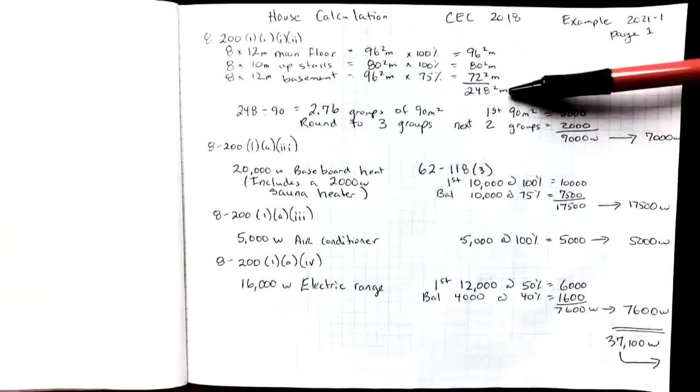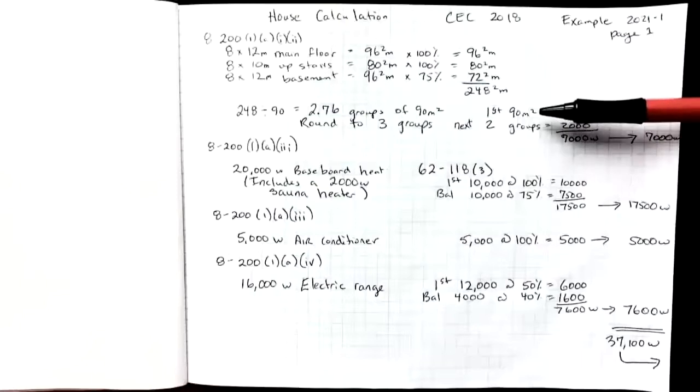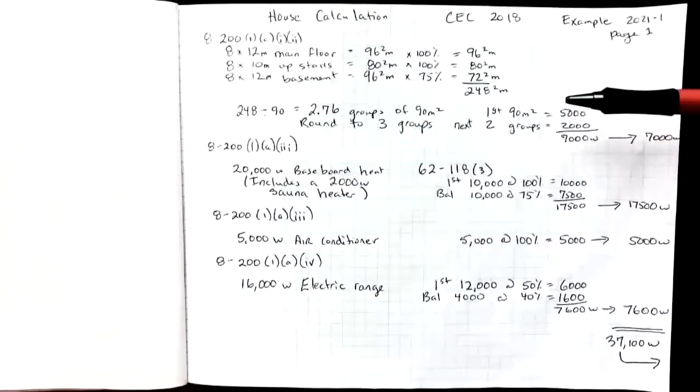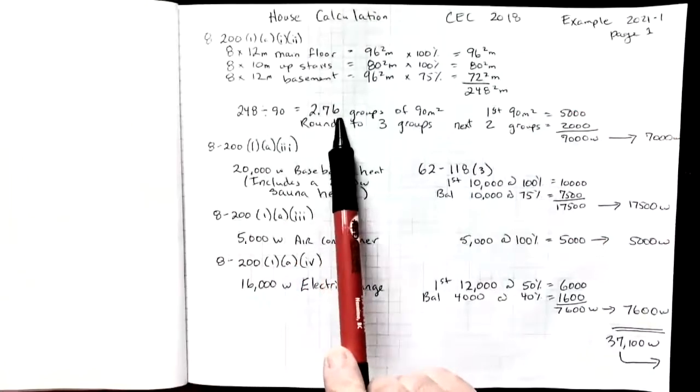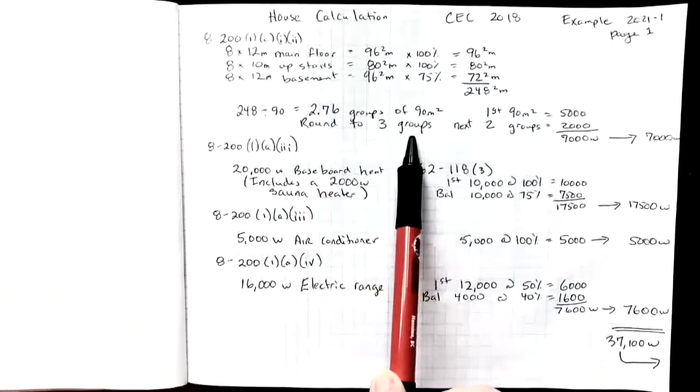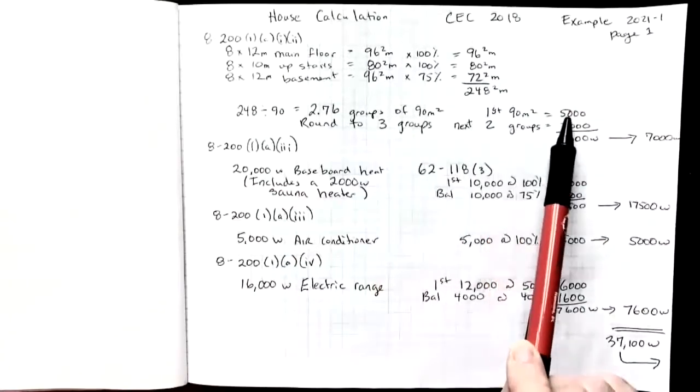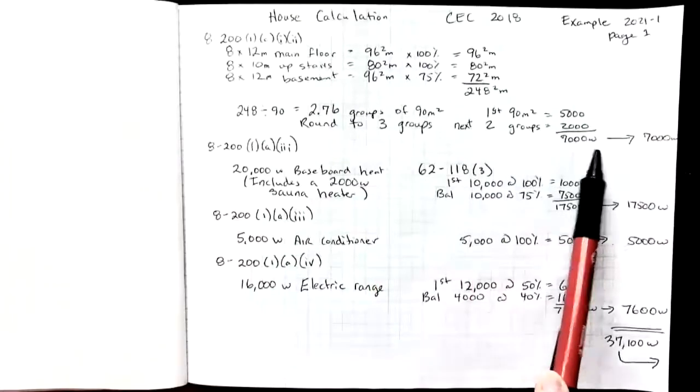This gave me 248 square meters and what I'm doing is I'm going to break that into groups of 90 meters squared because the code tells us to use for the first 90 meters squared we're going to have a demand factor of 5,000 and then for each group of 90 meters squared after that we're going to add 1,000 per group. So 248 square meters divided by 90 gives me 2.76 groups. Round that up to three groups because it doesn't matter if it's a part of a group or a whole group it still gets the full 1,000. So 5,000 for the first 90 meters squared, an additional 2,000 for the next two groups. My basic load would come to 7,000 watts.